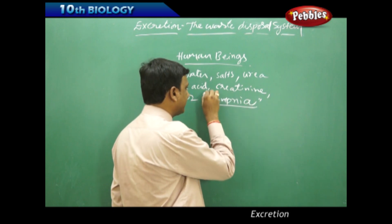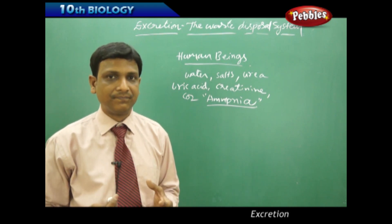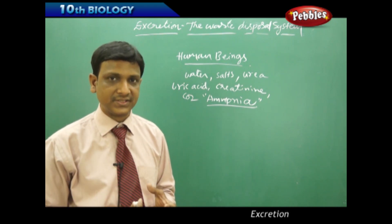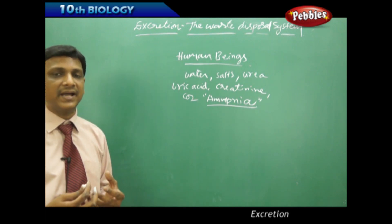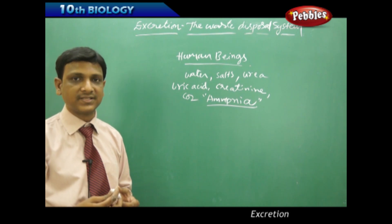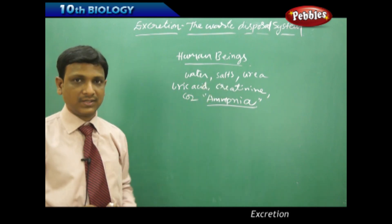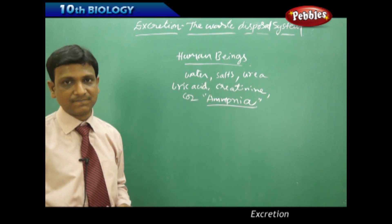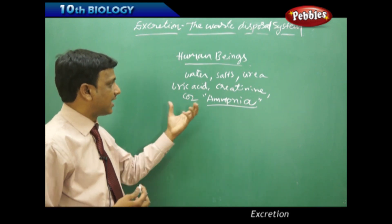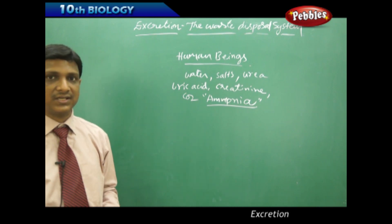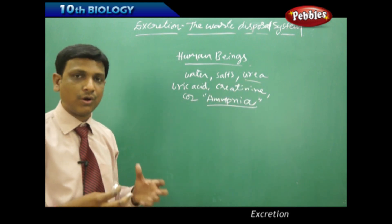Among these materials, ammonia is the most toxic. If these materials accumulate in our body, they will disturb our cellular activities. If the water level increases inside the cells, it leads to a condition called edema, where excess water disrupts the osmosis process. If salts or ions are more in the cells, the ionic balance is disrupted and the pH is changed, leading to further problems.